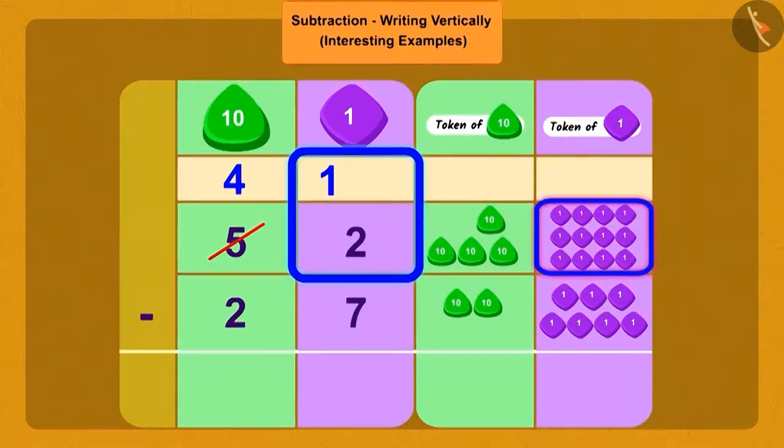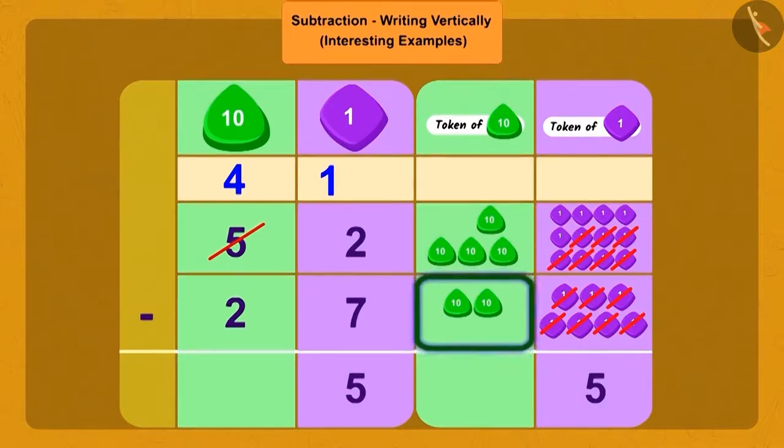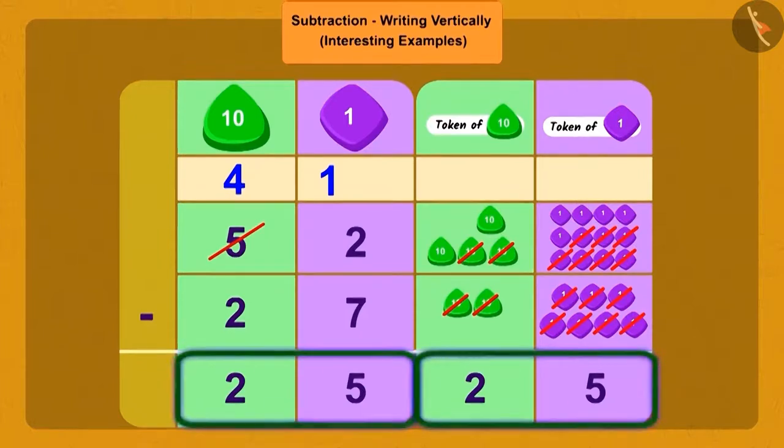So, now how many ones do we have? 12 ones. Now, subtracting 7 ones from 12 ones is 5 ones. And subtracting 2 tens from 4 tens is how many tens? 2 tens. So, how many more pages did Shere Khan read than Bholar? Absolutely correct. 25 pages.